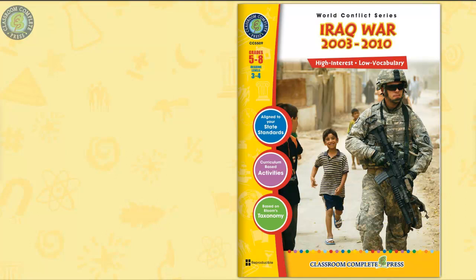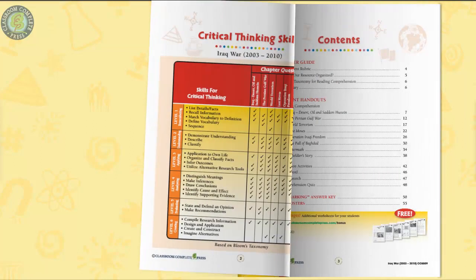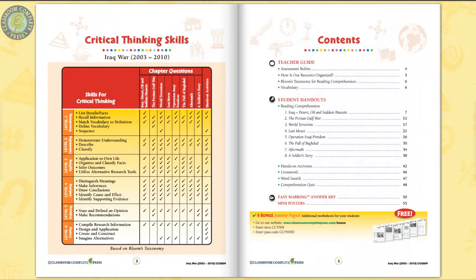This ready-made lesson plan on the Iraq War is for learners in grades 5 to 8, with a simplified reading level of grades 3 to 4. From 2003 to 2010, our resource brings to life the unrest and instability of Iraq, as well as the anti-war feelings and protests in the U.S. that resulted from this conflict.